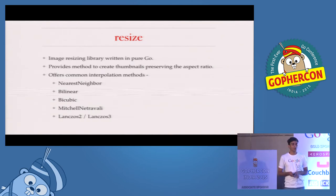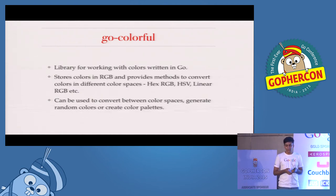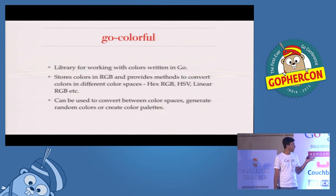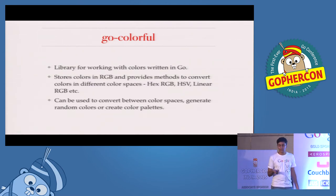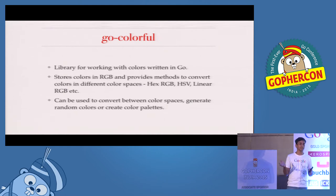Also, if you're interested in playing with different color spaces — transforming colors from one space to another — there is a library called Go Colorful. It basically stores color in RGB format, and also has support for hue saturation value format, hex RGB, linear RGB, and all these color spaces. It also has a bunch of other methods for generating random colors or creating a color palette based on a certain color space.